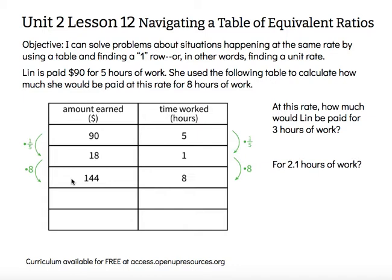So at this rate, how much would Lynn be paid for three hours of work? If she's paid that same rate for three hours, I'm going to put three in the time column and realize she's working three times as many hours as one hour. So I take that hourly rate of $18 and multiply it by three. She would make $54 in three hours.